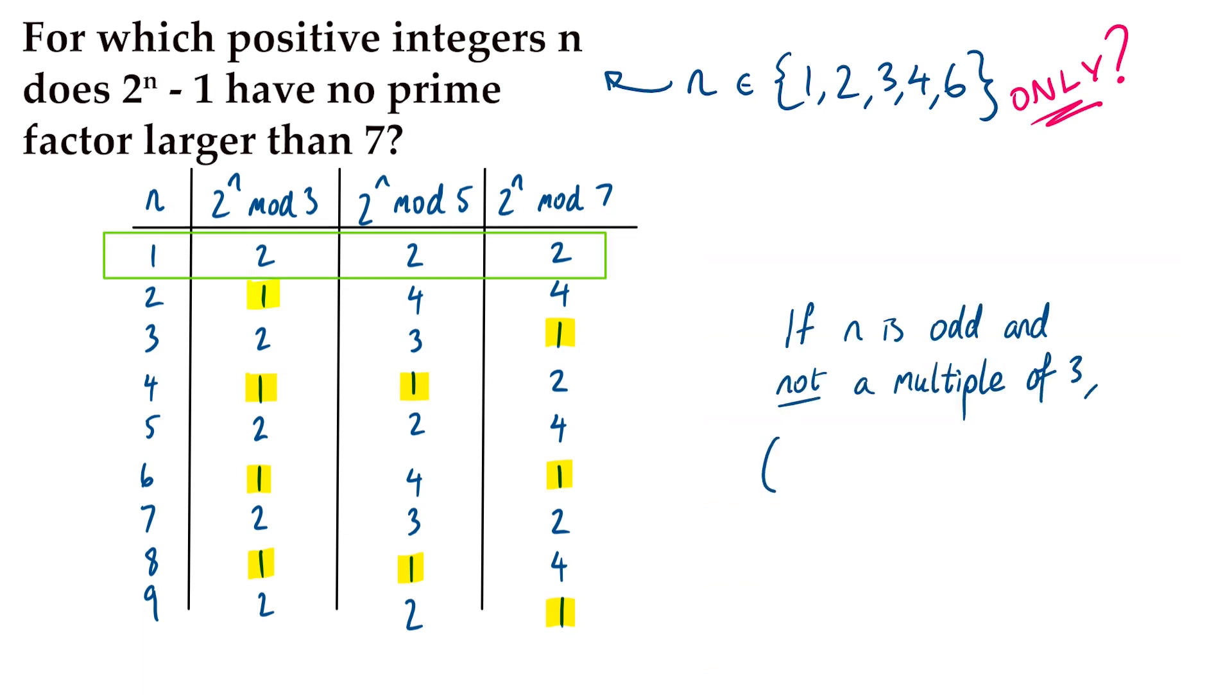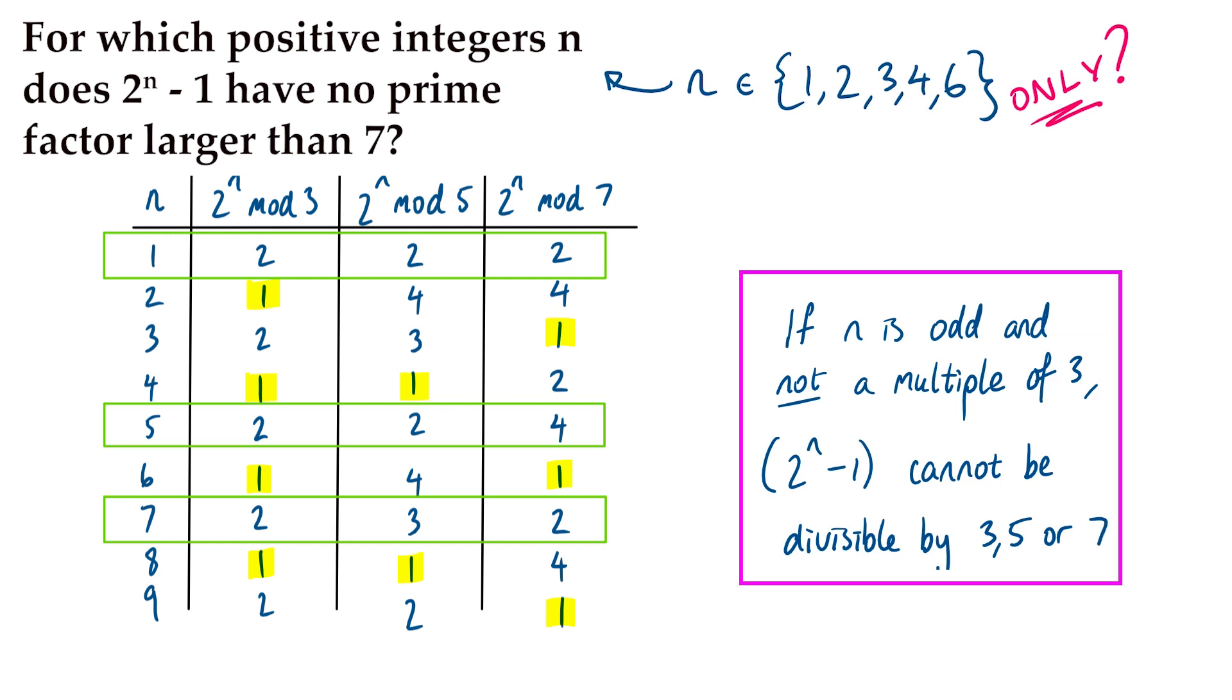So, n equals 1, 5, 7, if we were to keep going, 11, 13, 17, 19, etc. Those numbers must have a prime factor larger than 7.